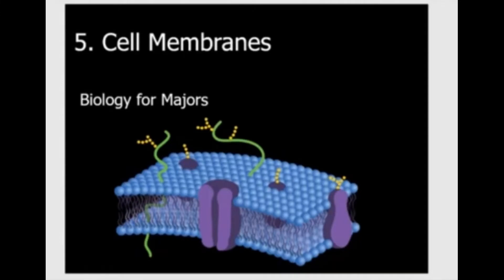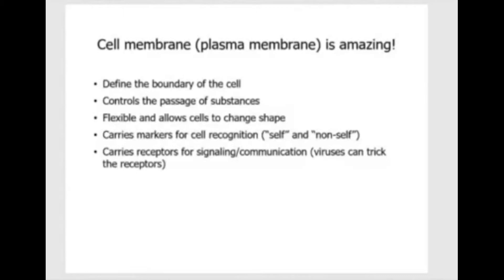In the last chapter, we looked at different cell structures, from cell wall to cell membrane to all the structures inside the cell. In this chapter, we're going to focus on one of those structures, which is the cell membrane, also known as the plasma membrane. The plasma membrane is an amazing structure because it defines the boundary of the cell, and if this boundary is damaged, the cell is not going to survive.